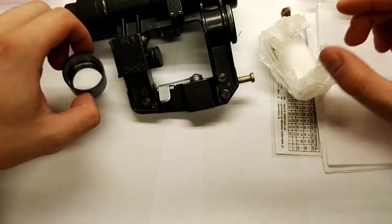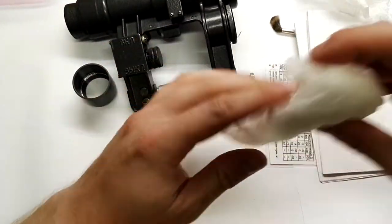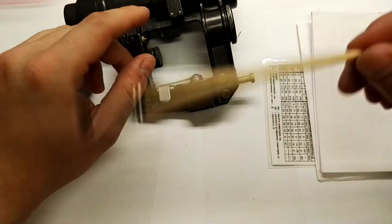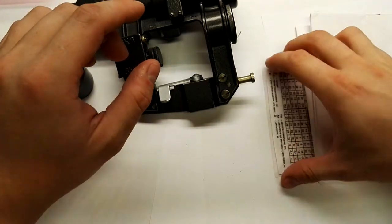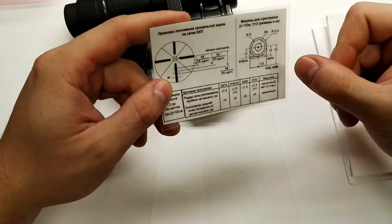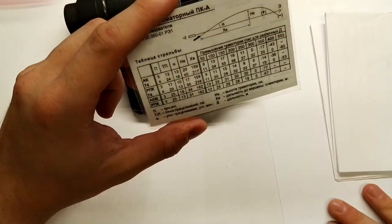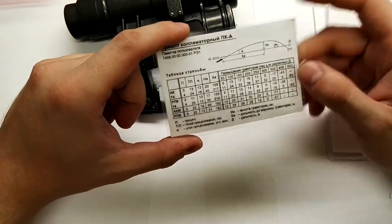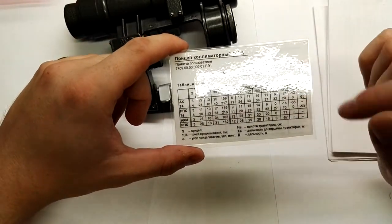You'll also get this cleaning cloth that was packaged here, a brush for removing particles, and some basic information on how to zero the scope.